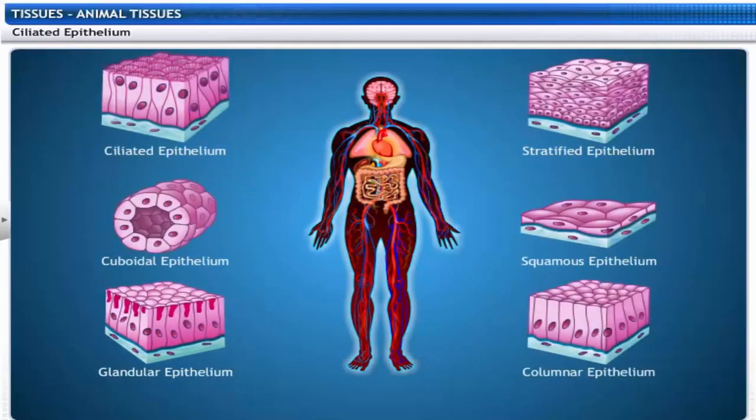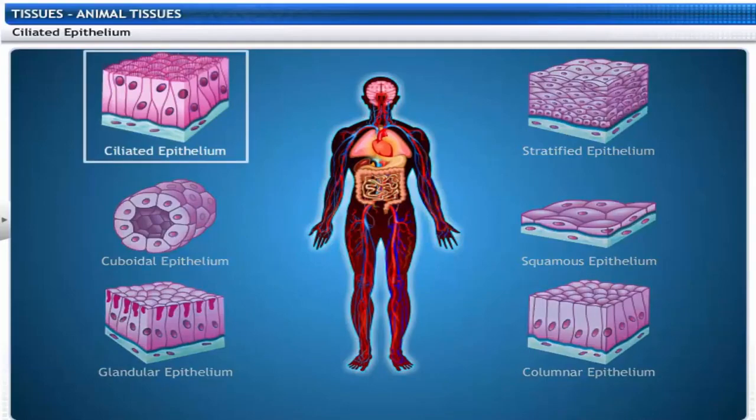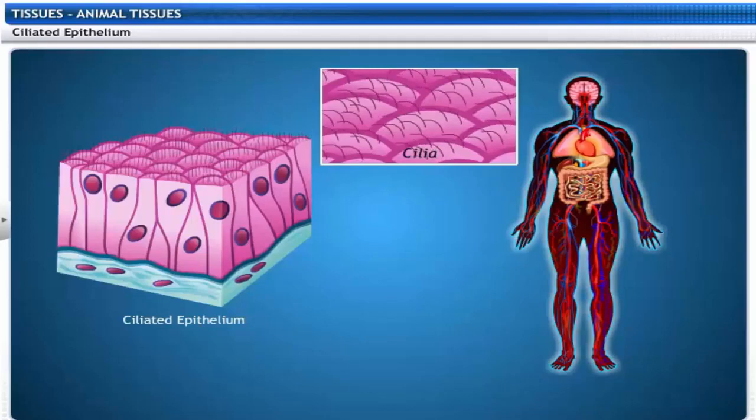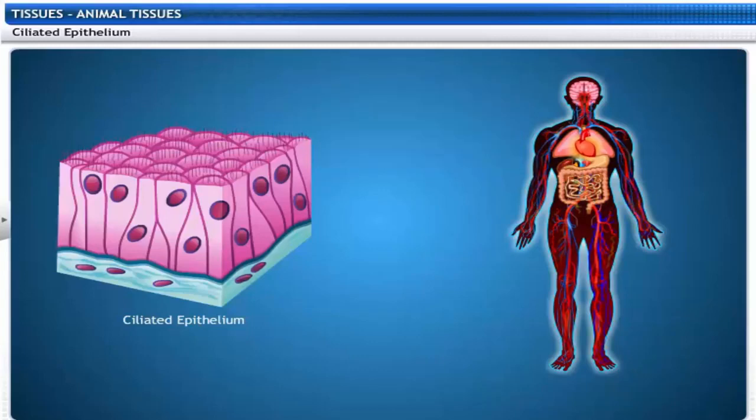This is the lining of the respiratory tract where ciliated epithelium tissue is found. These tissues are actually columnar cells with hair-like projections called cilia. Cilia are motile and this movement pushes the mucus forward into the nasal tract to clear it.